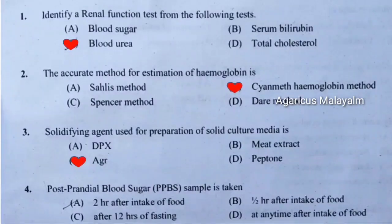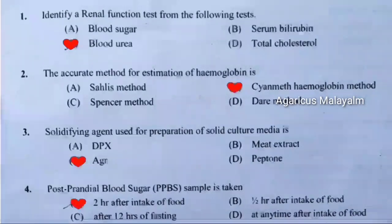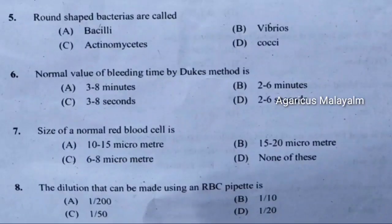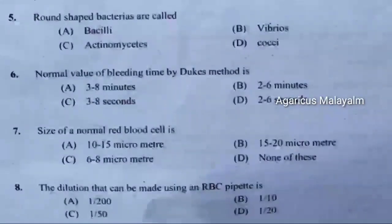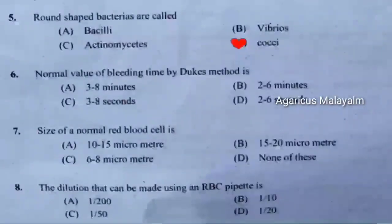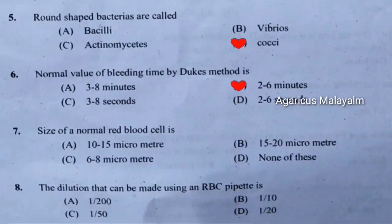Fourth question: Post-prandial blood sugar sample is taken. Correct answer is option A — 2 hours after intake of food. Fifth question: Round shaped bacteria are called. Correct answer is option D — cocci. Sixth question: Normal value of bleeding time by Duke's method is. Correct answer is option B — 2 to 6 minutes.